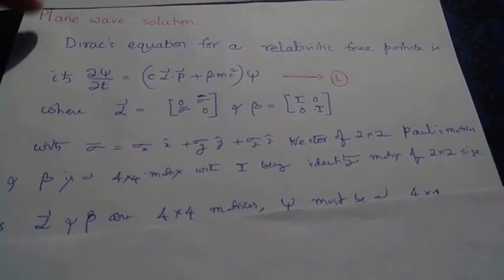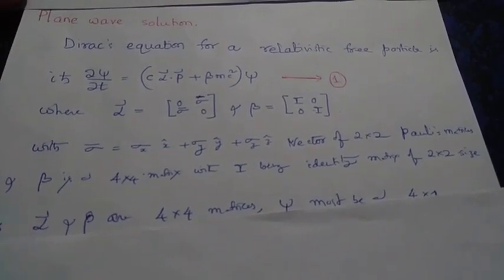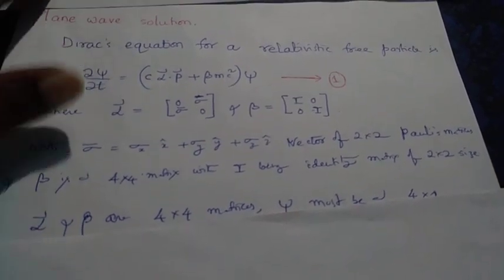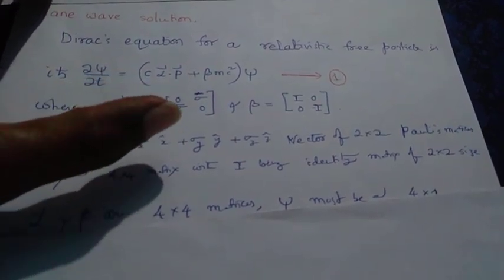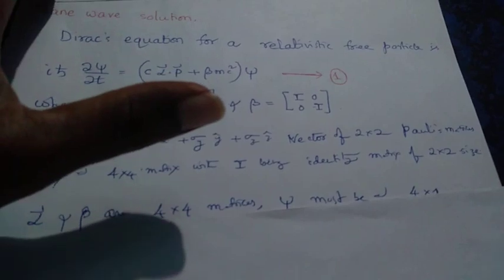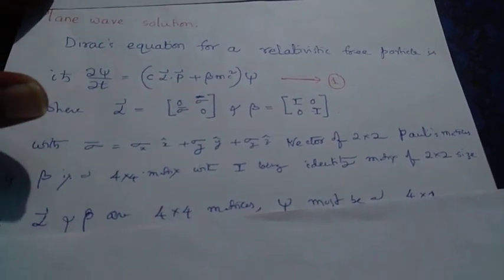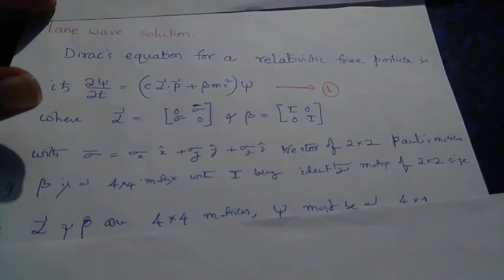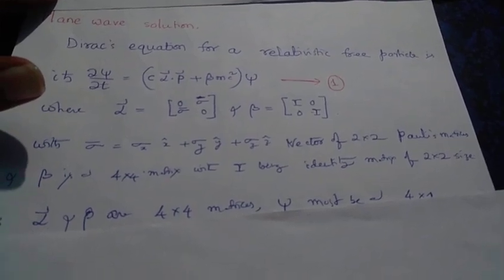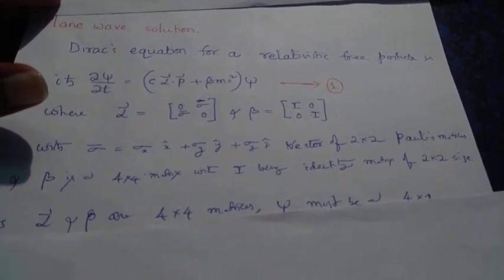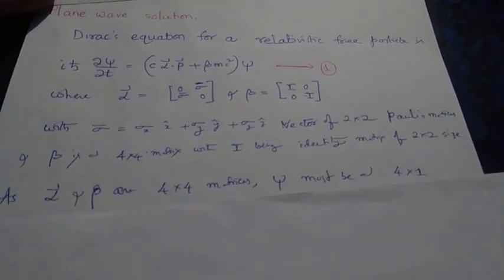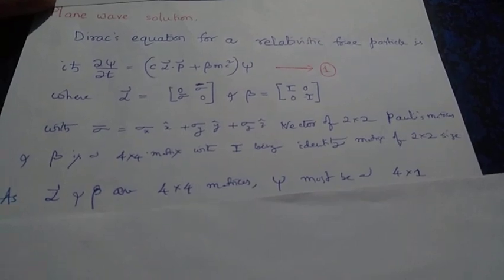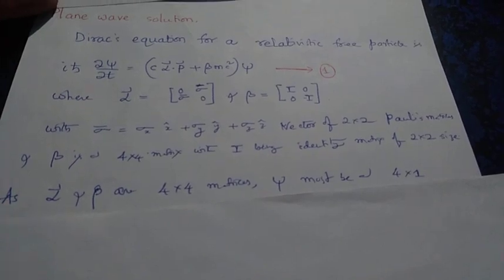We can see that alpha and beta are actually four by four matrices. That is because the zeros here are actually two by two matrices with zeros, and the identity I in beta is a two by two identity matrix, while zero is again a two by two zero matrix.